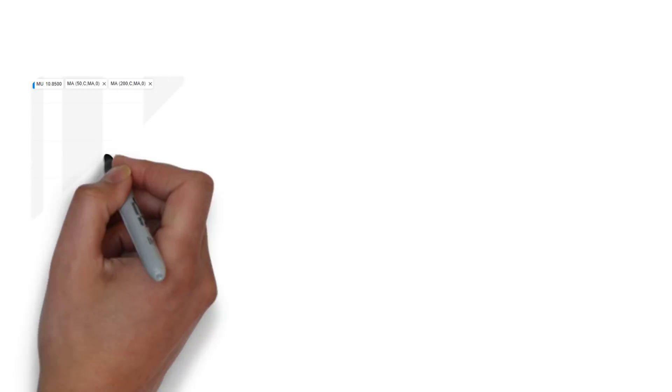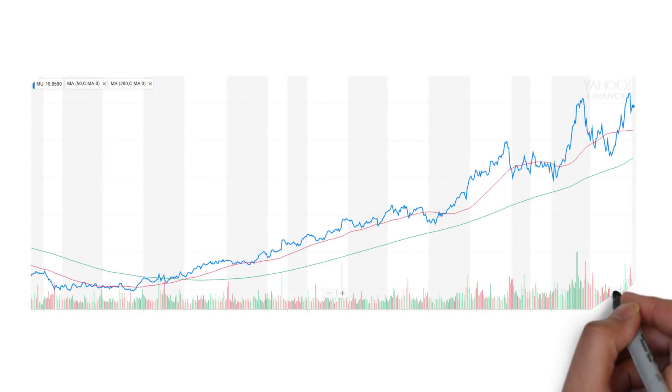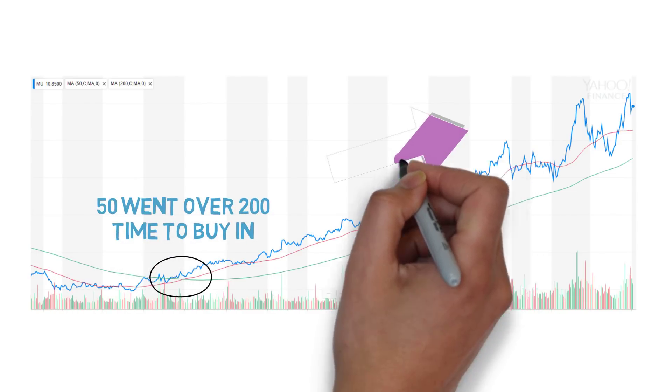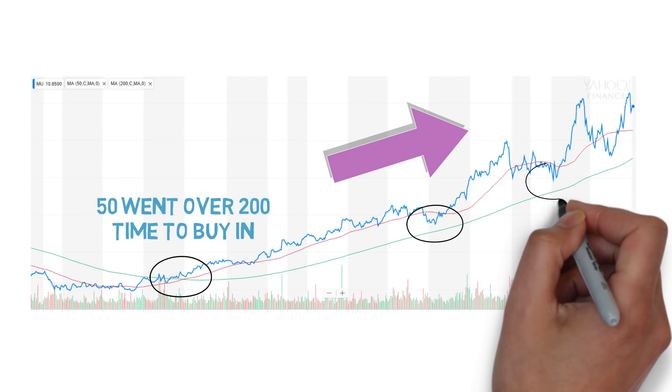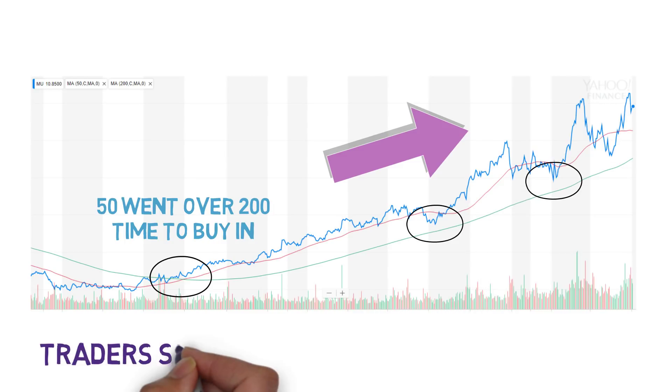Let's look at another example stock in Micron. In this two-year chart, we can see the cross happening last July. This is when the 50-day average went over the 200-day—a good sign to buy in. And over the next year, the stock has gone up by a lot. The price hasn't hit the 200-day line, so traders are really supporting that average.